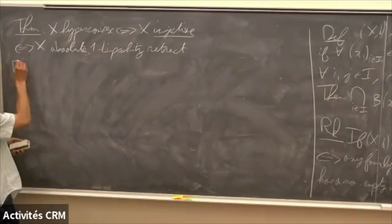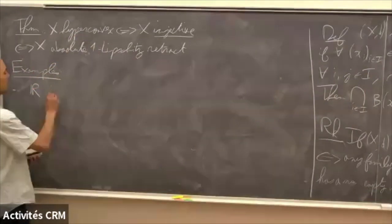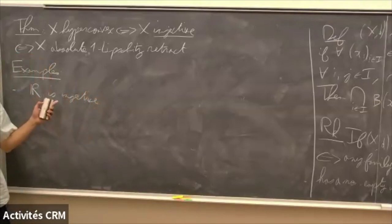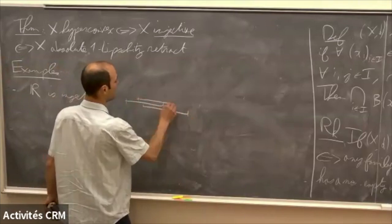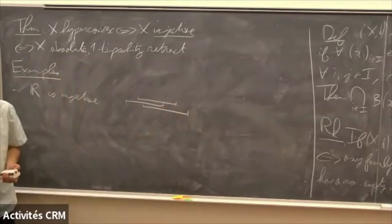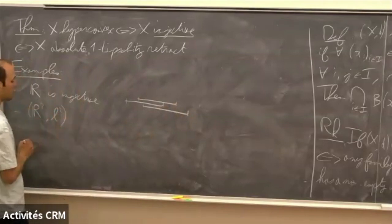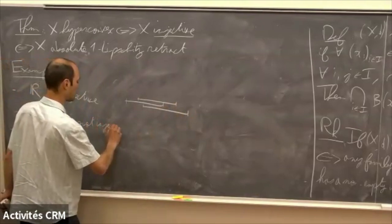The easiest example: R, the real line, is injective. I will give a proof, but checking hyperconvexity is in fact simple — you just have to check that intervals in R satisfy the heli properties, which is not hard. Another simple example is R² with the L2 metric — Euclidean space — and it is not injective.